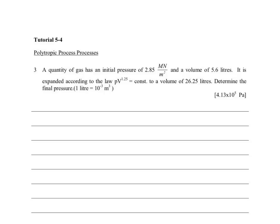For tutorial 5-4, we are looking at a polytropic process. In a polytropic process, we are given a quantity of gas. We really do not know what the gas is.